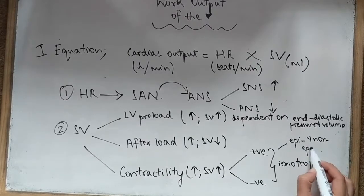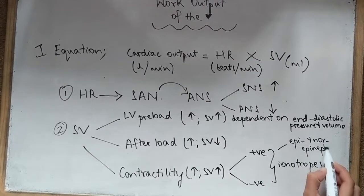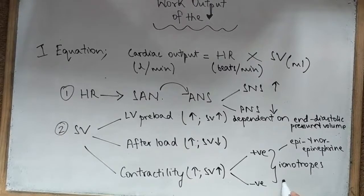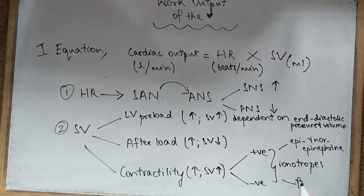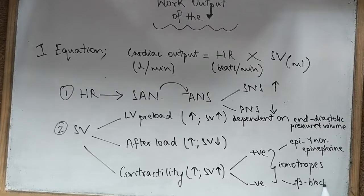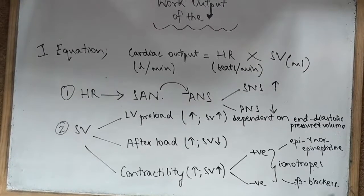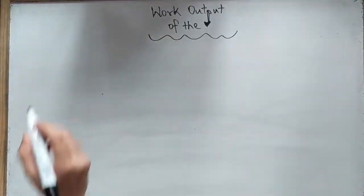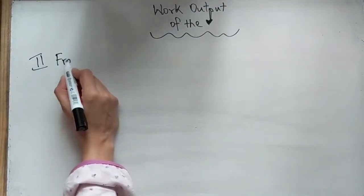This increases the rate of pressure development and the systolic pressure, which affects the stroke volume. Then you have the negative inotropes like beta blockers and calcium channel blockers, which have the opposite effect. Now we move on to the Frank-Starling mechanism.